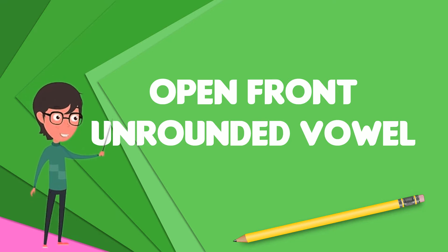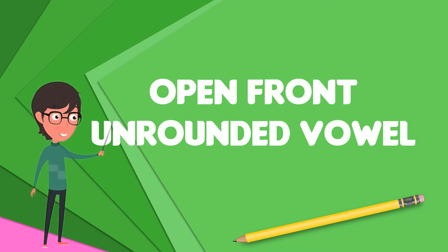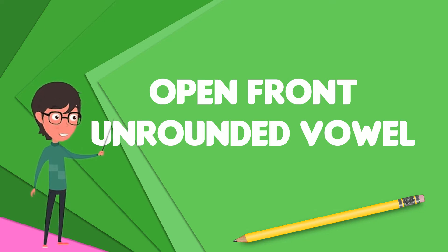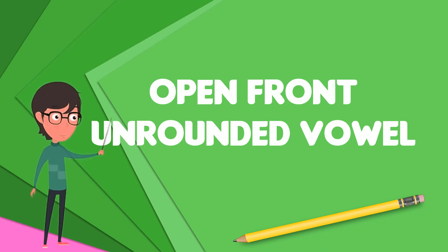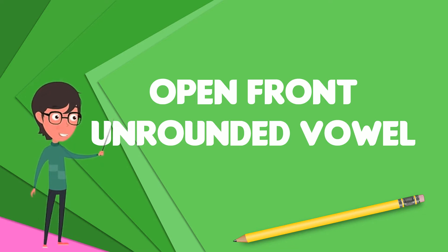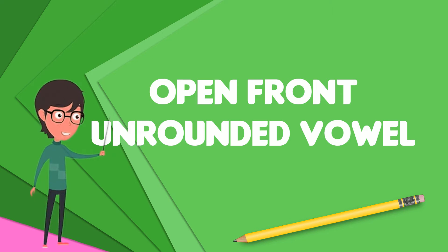In practice, it is considered normal by many phoneticians to use the symbol 'a' for an open central unrounded vowel and instead approximate the open front unrounded vowel with ash. This is the usual practice, for example, in the historical study of the English language.